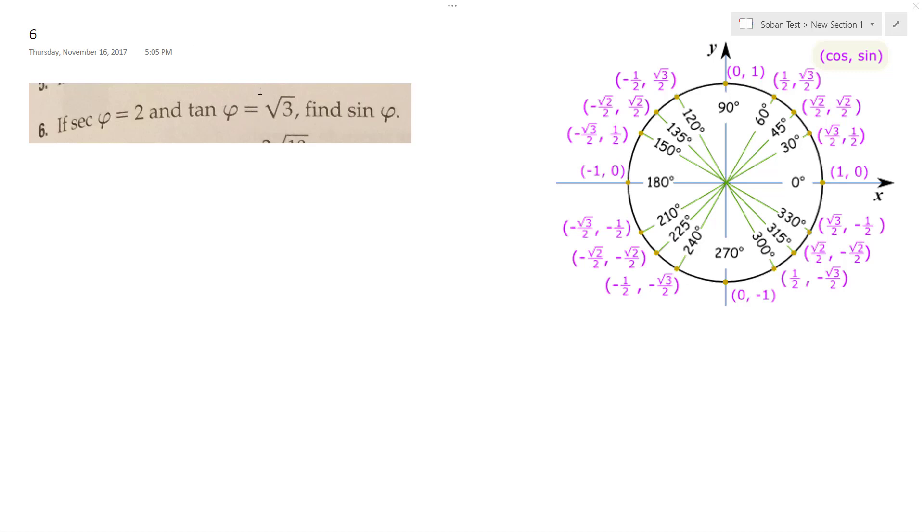Here we have the secant of, I can't remember what that Greek symbol is, it's called alpha equals two, tangent of alpha equals square root of three, find the sine.